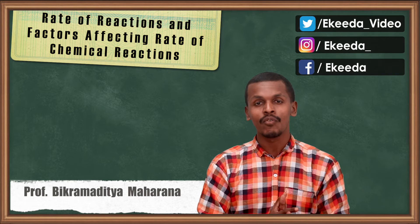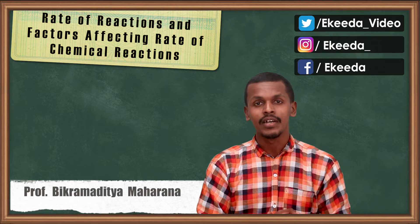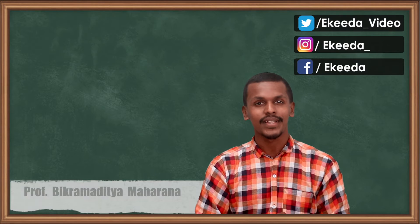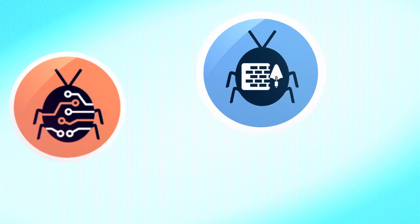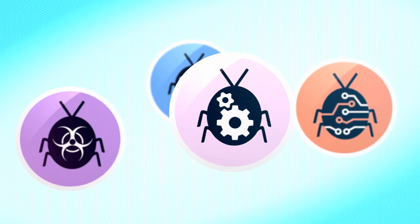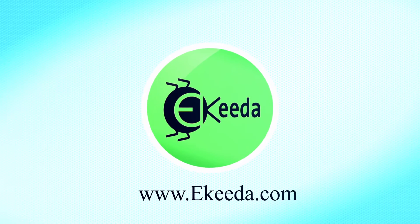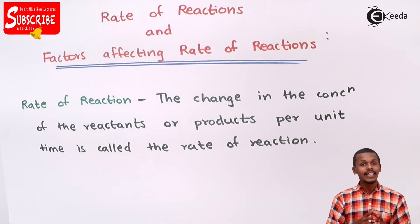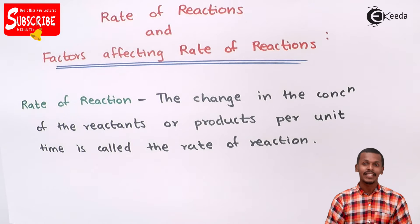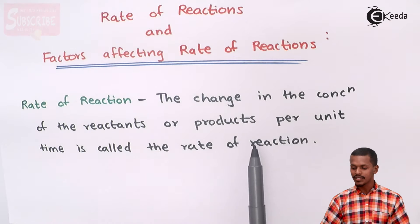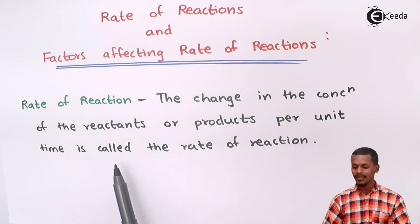We are going to study about the rate of reaction — what are the terms involved and what are the factors involved. Let us learn about what is actually the rate of reaction and understand its definition. The rate of reaction means the change in concentration of the reactants or products per unit time.